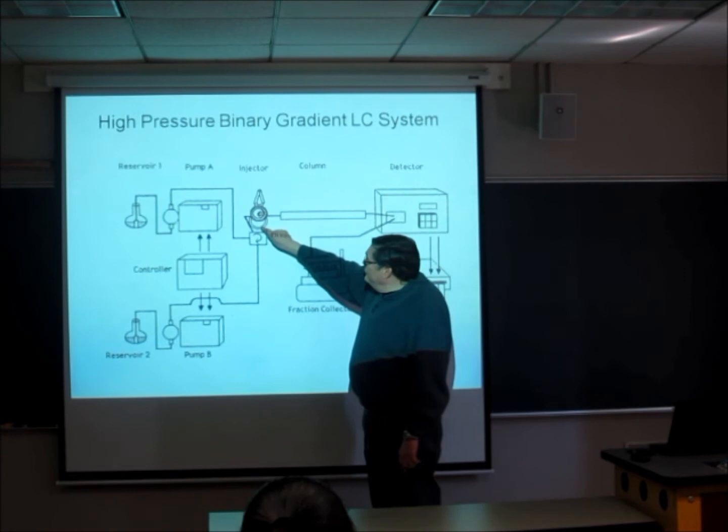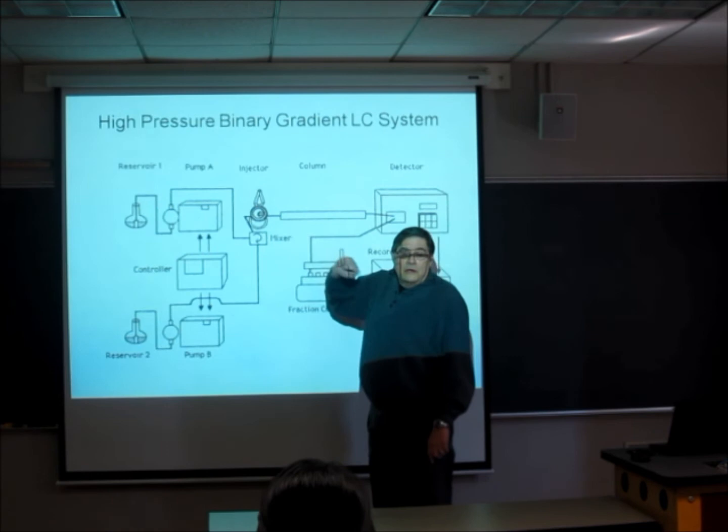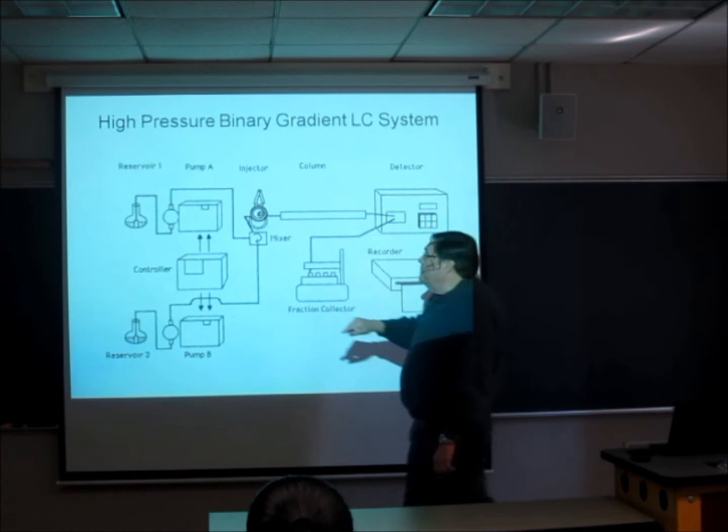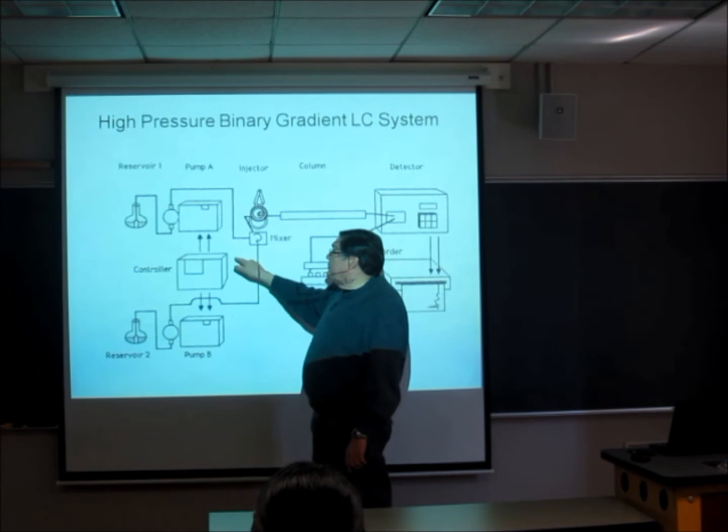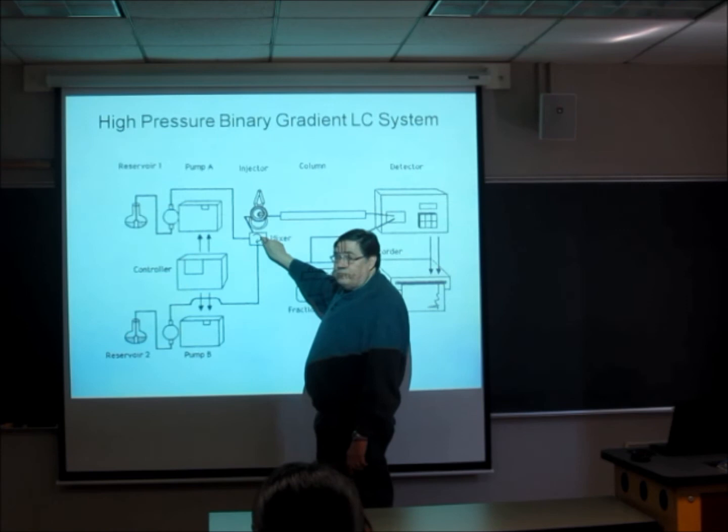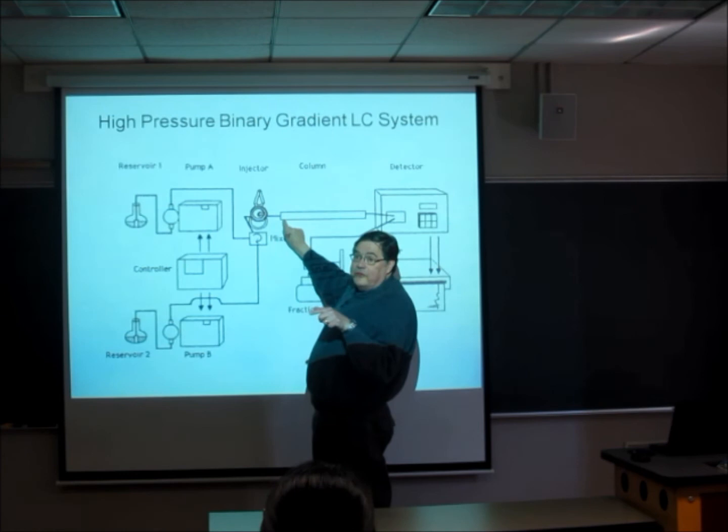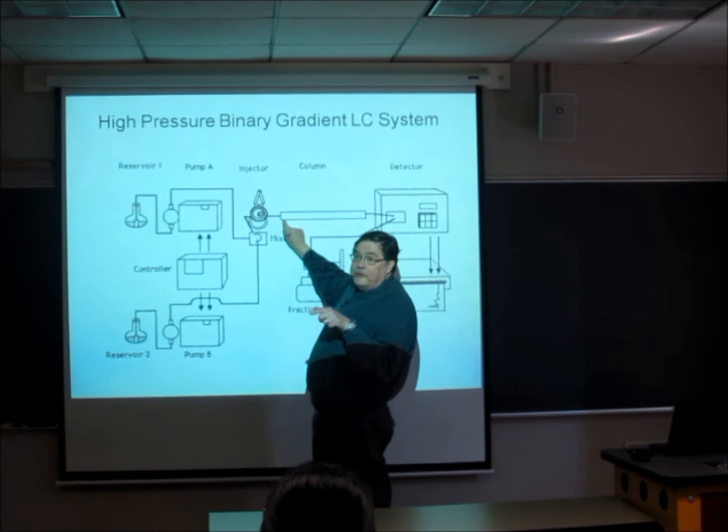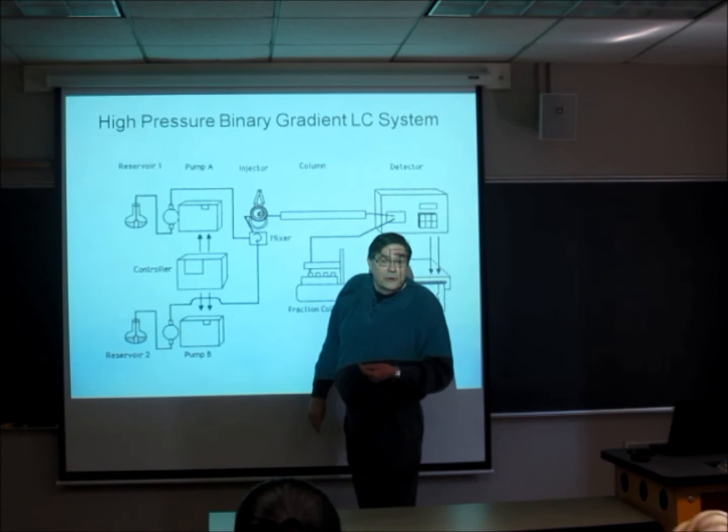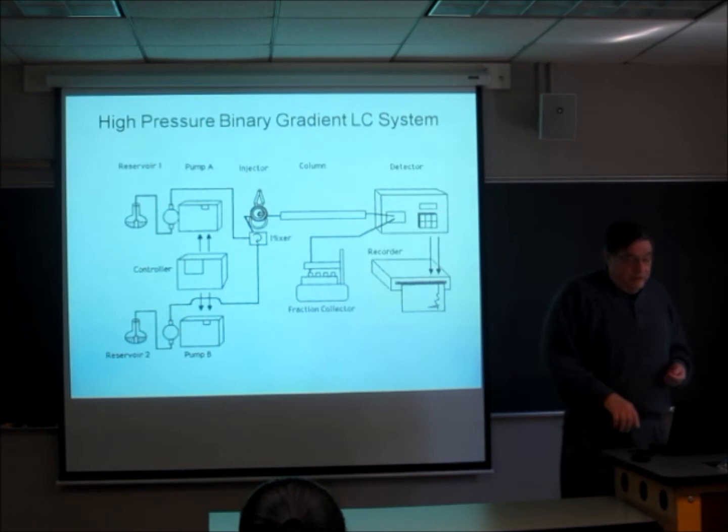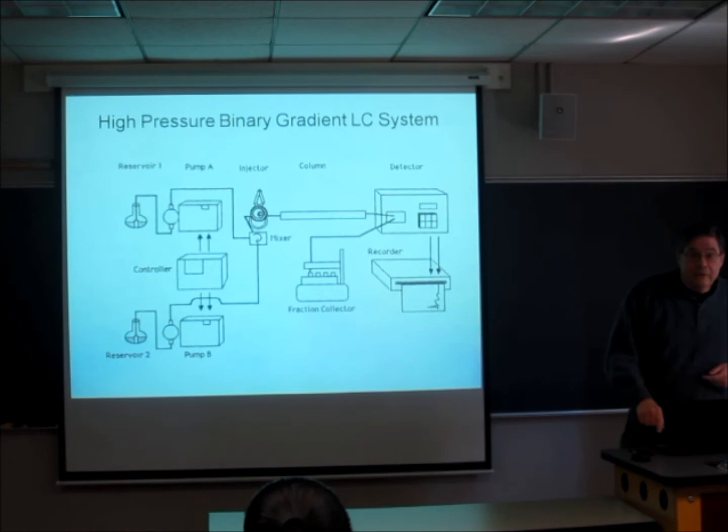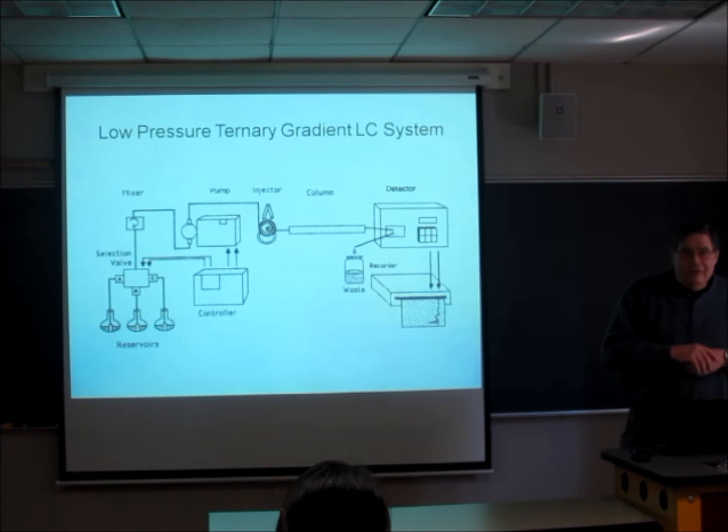In addition, I want to point out that the distance here from the mixer to the head of the column is called the gradient delay time. If you start with a particular mixture here and run that through, and then you tell the controller to change the gradient, the controller will change the amount of material that comes to the mixer by pumping at different rates. You may think that when you tell the gradient to start that the gradient is starting up here, but in fact the gradient starts down here. So there's a time delay between the mixture that you want to have and the mixture that the column is being immersed in.